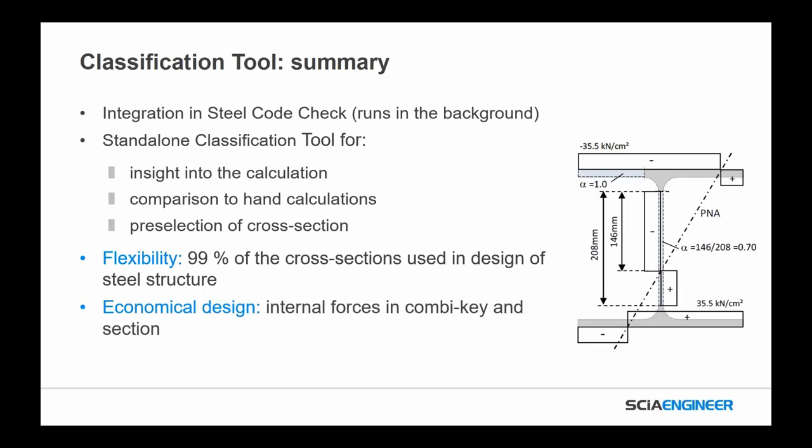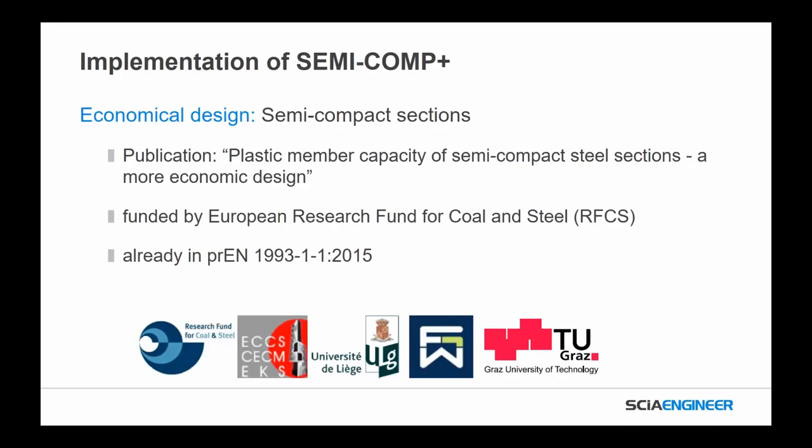We also implemented semi-compact sections to allow for a better and more economical workflow within steel design. We utilized the publication 'Plastic Member Capacity of Semi-Compact Steel Sections: A More Economical Design,' funded by the European Research Fund for Coal and Steel. It's already part of the Eurocodes, so we wanted to include it in the software. In this semi-compact approach, a limited plastic strength can be used for semi-compact sections; if a section is almost in Class 2, the capacity will be comparable to Class 2; and we have corrected limits between classes so there's no discrepancy in the Eurocode.